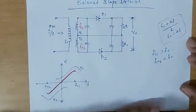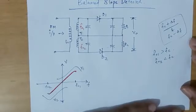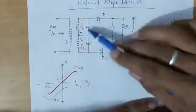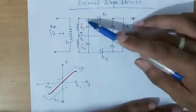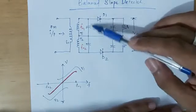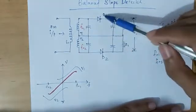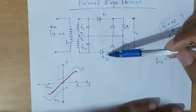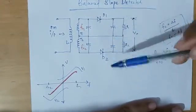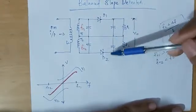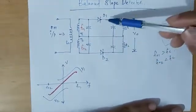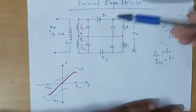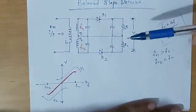Each side uses an envelope detector. The upper winding is connected to a diode D1 which forms an envelope detector. Similarly, the lower winding is connected to a diode D2 forming an envelope detector on the lower side.